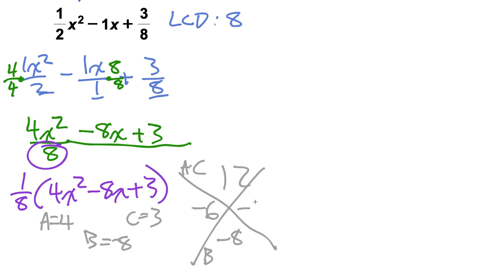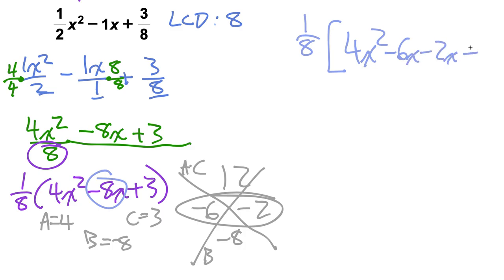What multiplies to give me 12, adds to be negative 8? I'm going to go with negative 6 and negative 2. That's going to replace our middle term, that negative 8x. We're going to keep that one-eighth out front, and then we have 4x squared minus 6x minus 2x plus 3.